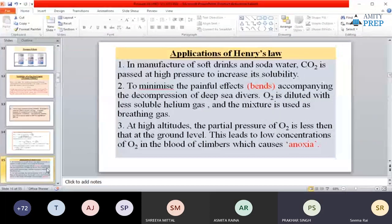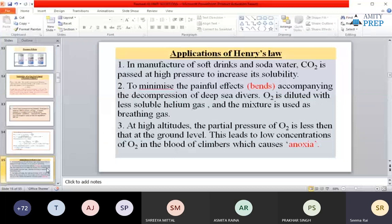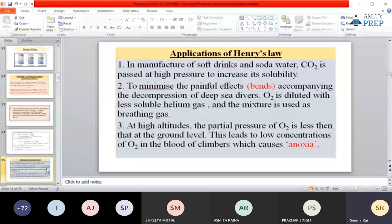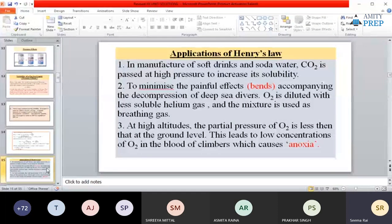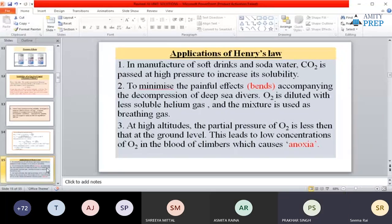To avoid bending, we are using a mixture. Along with oxygen and nitrogen, helium is also taken. Helium is very less soluble, so helium is taken along with the oxygen and nitrogen. The percentage of helium is 11.7 percent, and because it's less soluble, that painful situation becomes less painful.